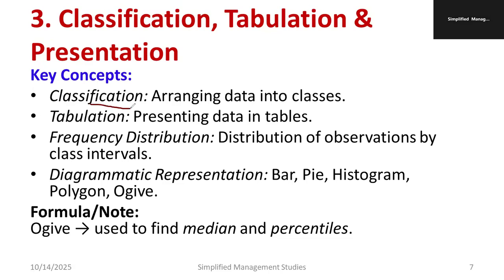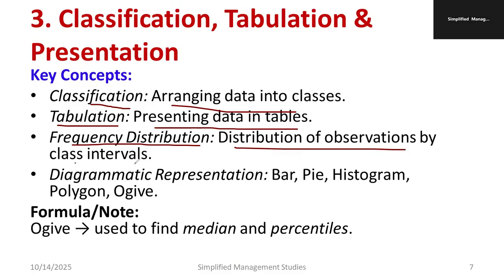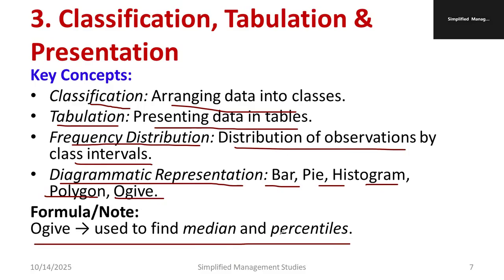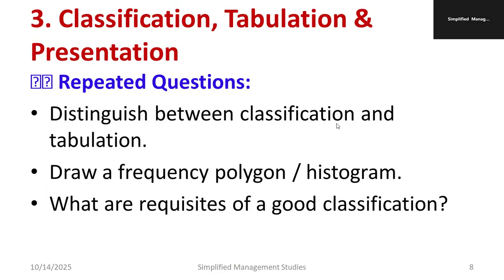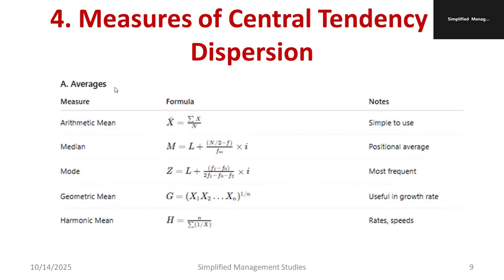Regarding classification, tabulation, and presentation: classification means arranging data into classes; tabulation means presenting data in tables. Frequency distribution is the distribution of observations by class intervals. Diagrammatic representations include pie diagram, bar diagram, histogram, frequency polygon, and ogive. The ogive is used to find the median and percentages. Important questions: distinguish between classification and tabulation, draw a frequency polygon and histogram, and what are the requisites of a good classification.